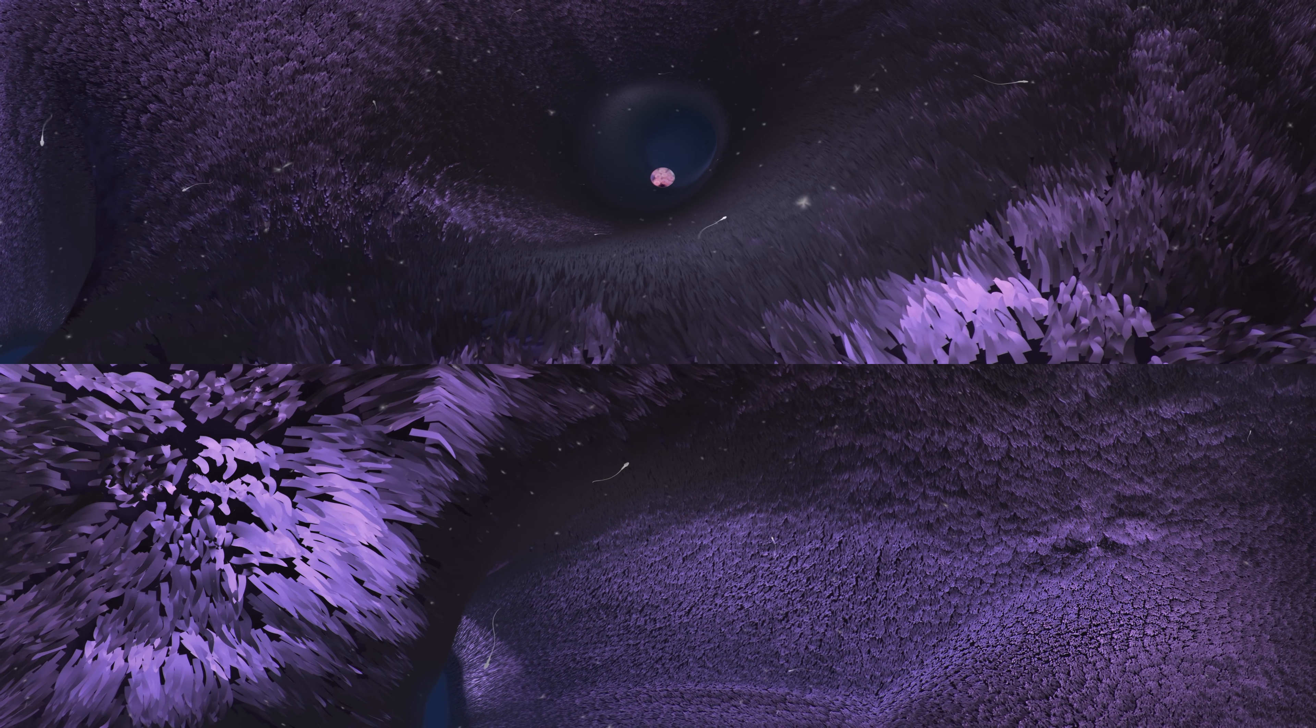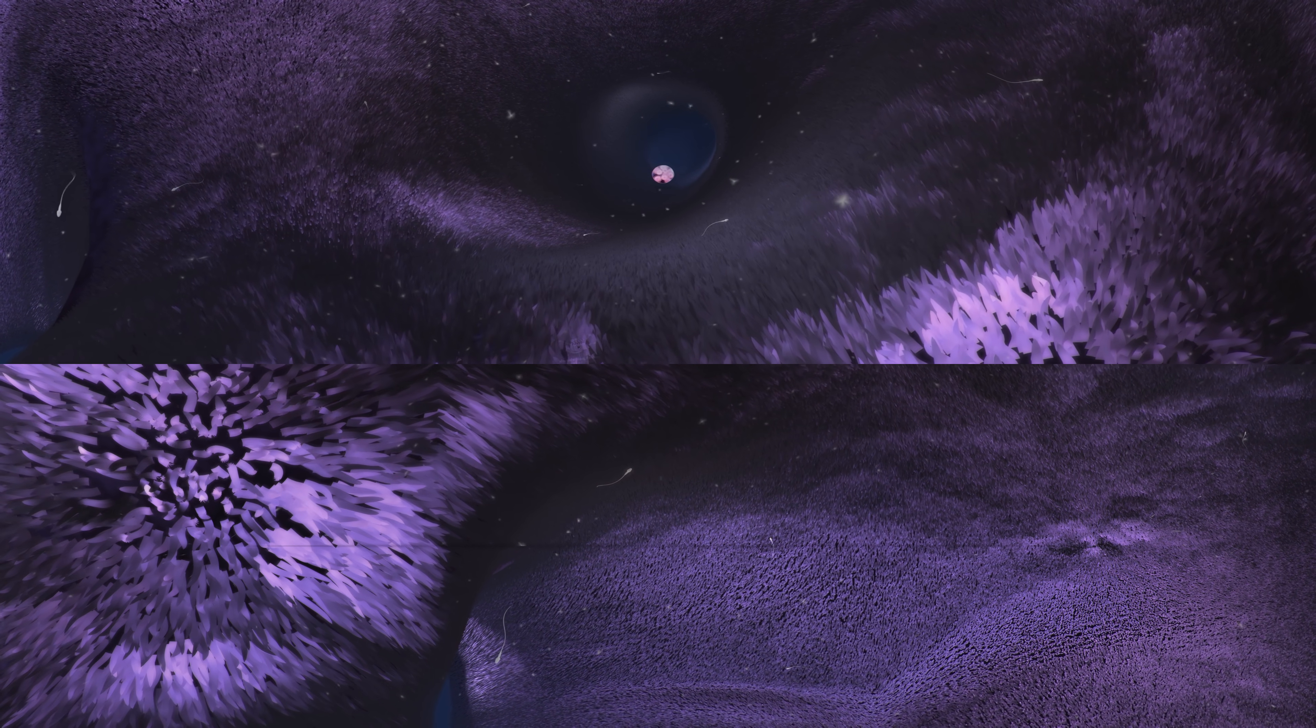As the cells are dividing, gentle muscle contractions in the tube's walls and tiny hair-like structures called cilia propel the zygote along the fallopian tube toward the uterus. This journey typically takes about three to five days.